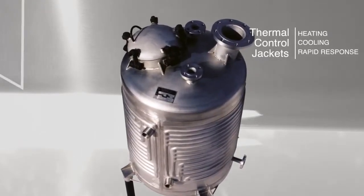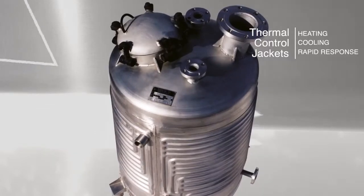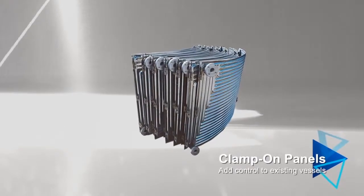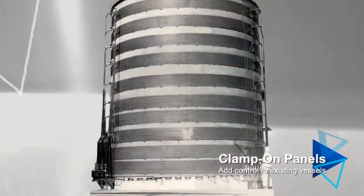And because they deliver higher flow velocities than other technologies, heat transfer is improved and fouling reduced. Clamp-on Plate Coil Panels convert existing unjacketed vessels to thermally controlled process units.